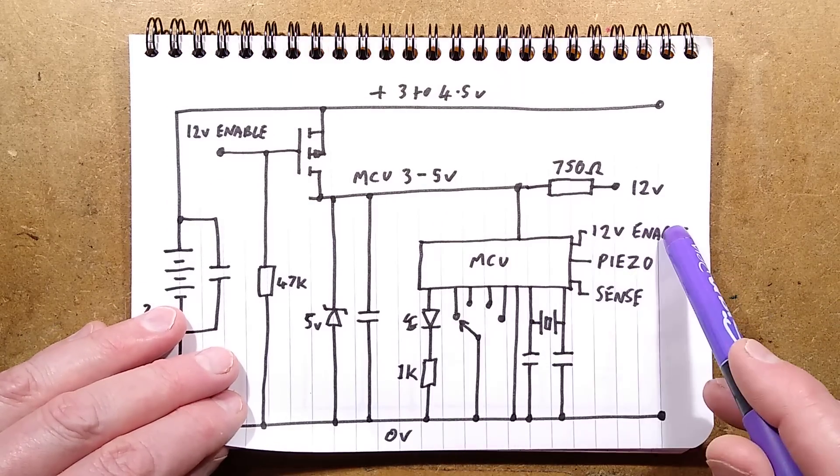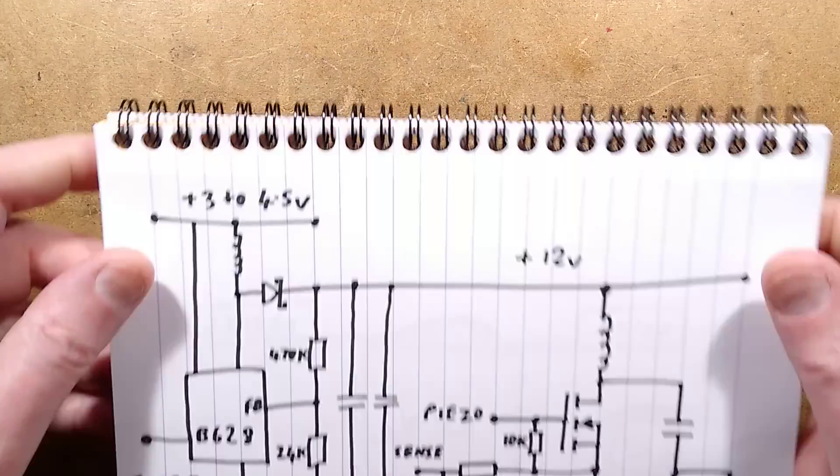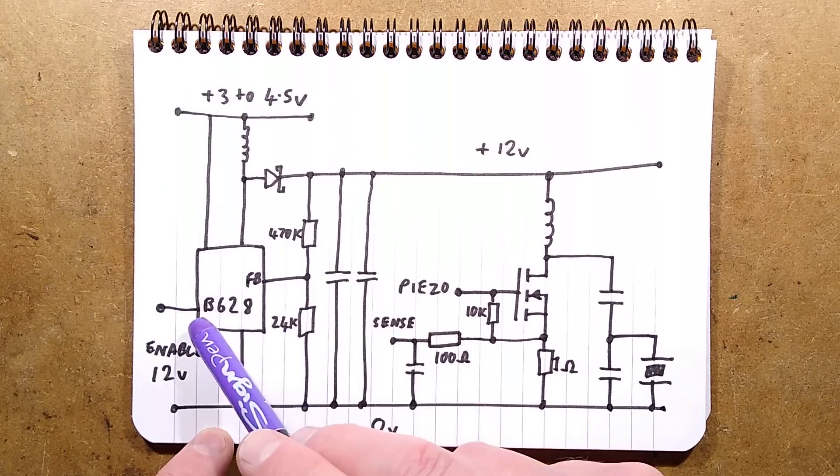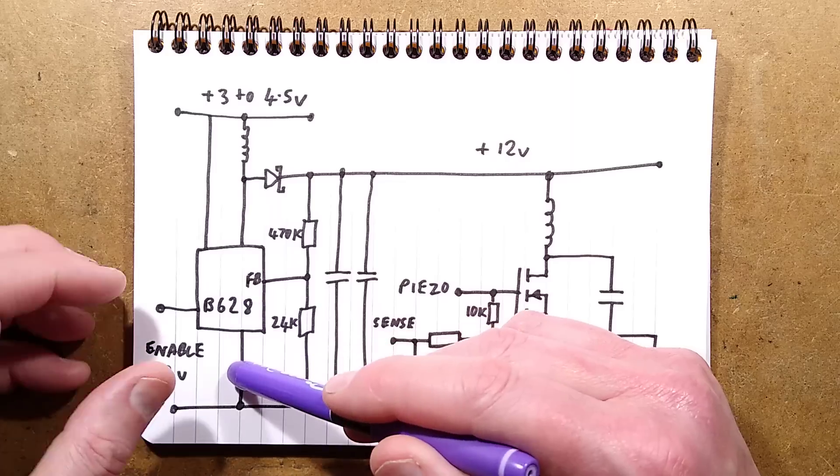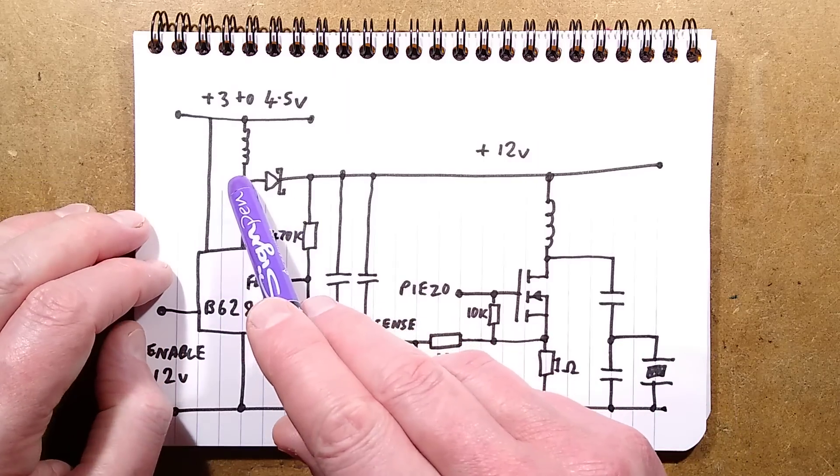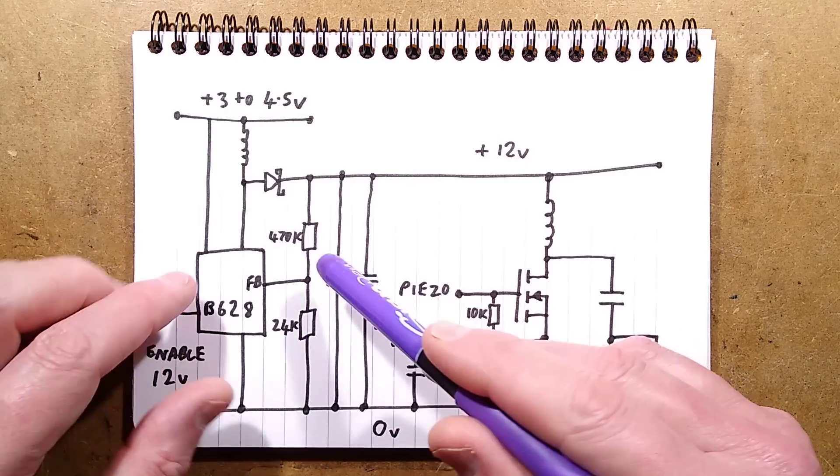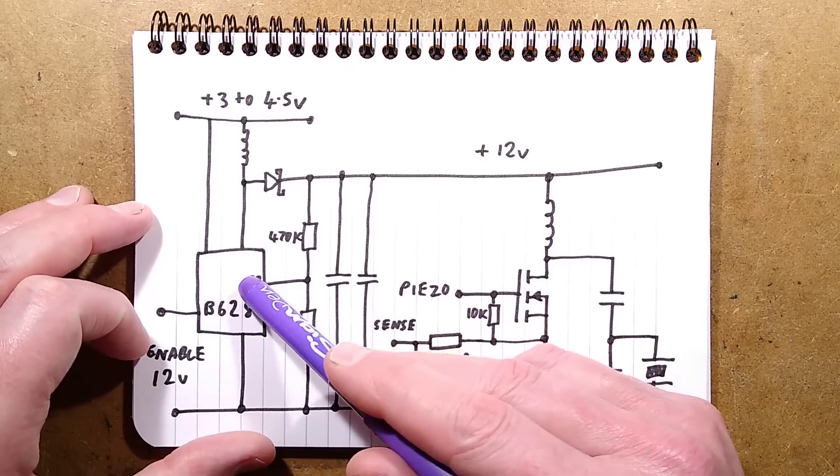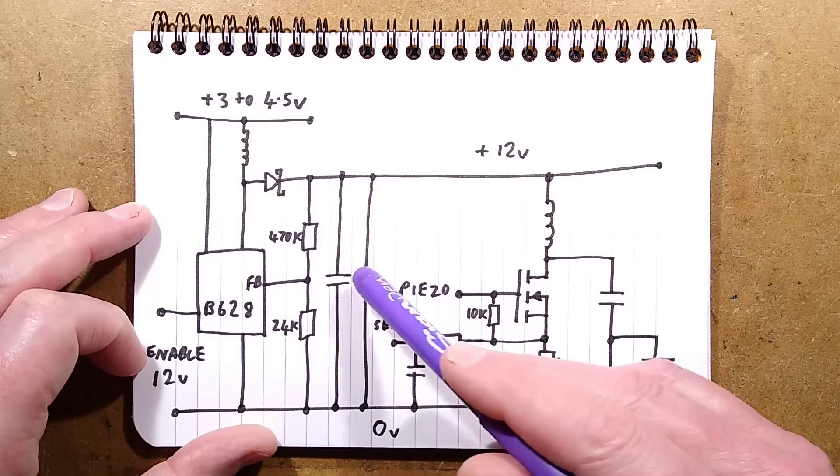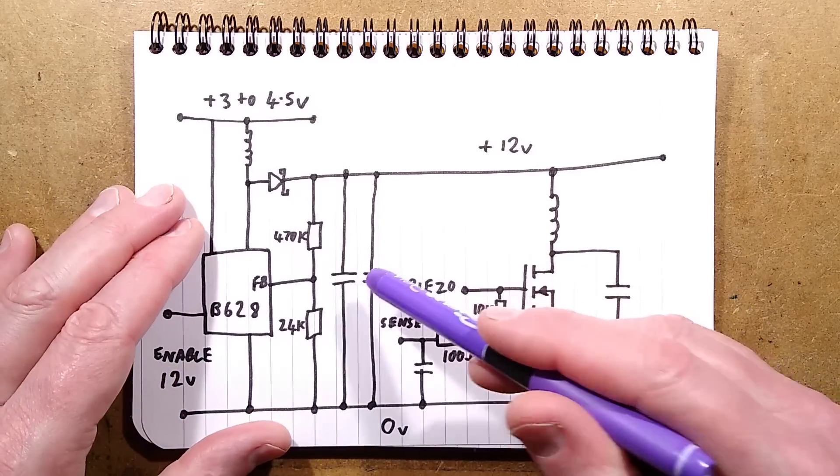The three outputs of the microcontroller: 12 volt enable, the piezoelectric drive and the sense back from the piezo. When it wants to activate the piezo, it sends the enable signal to this little B628 boost chip, which then uses this inductor pulsed to the zero volt rail to put an inductive charge on the inductor. But then when it turns off, it goes through this Schottky diode to charge up these capacitors. There's two resistors across here that are used to set the voltage because this is a programmable voltage regulator, boost regulator. In this case, the choice of resistors they've chosen will give roughly 12 volts out.